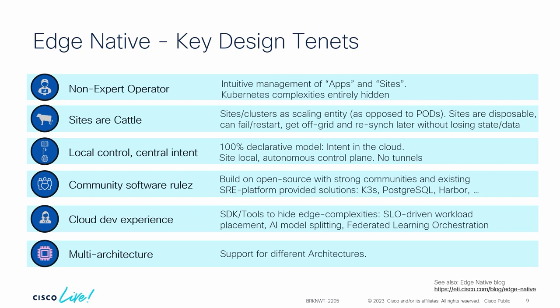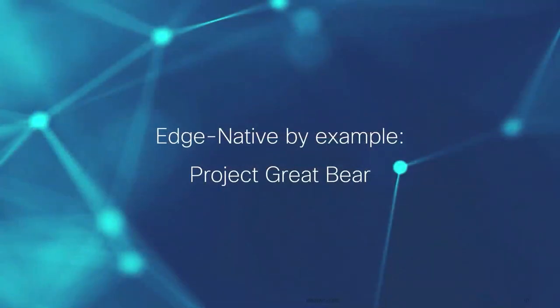We built this based on community software. The tool chain we use for observability is exactly the same as you would use in cloud-native — it's Prometheus-based. If you have a Prometheus client endpoint solution like AppDynamics or Grafana, you can tap into it and extract information as with any other cloud-native solution. There's no special observability solution just for the edge. We really maintain the cloud development experience.